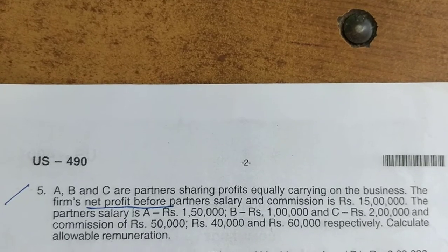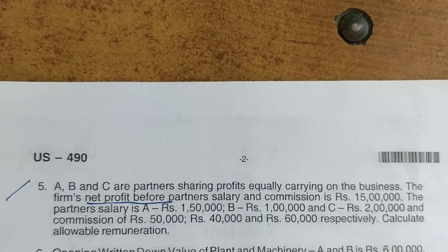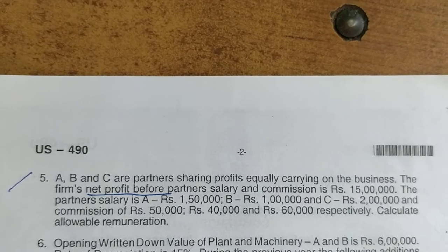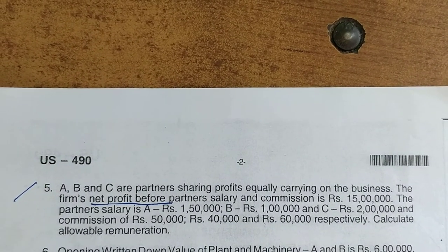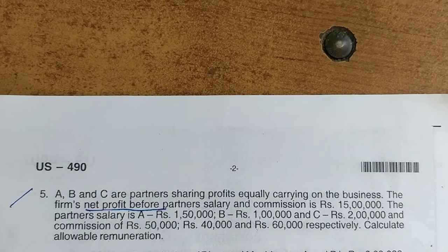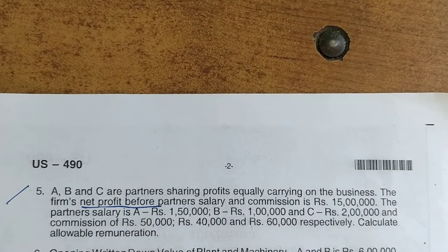The firm's net profit before partner's salary is A 1 lakh 50, B 1 lakh, C 2 lakhs and commission is 50,000, 40,000, 60,000 respectively. Calculate allowable remuneration.